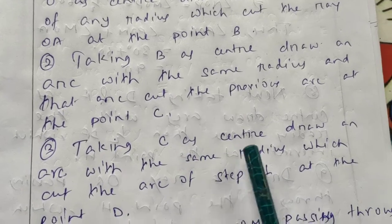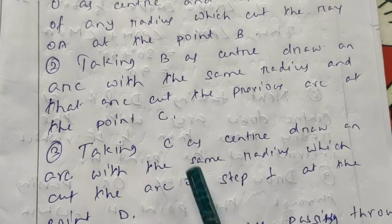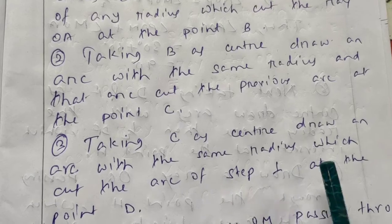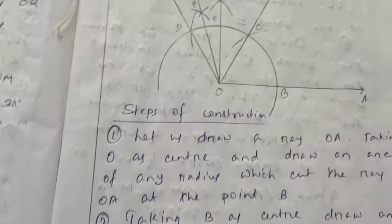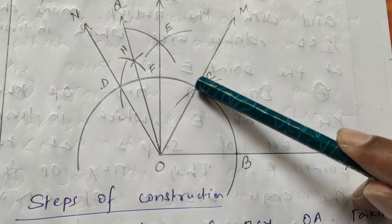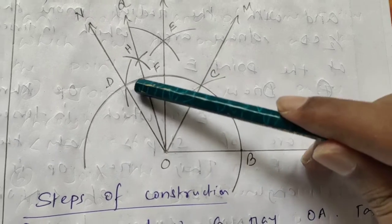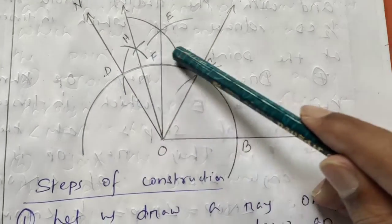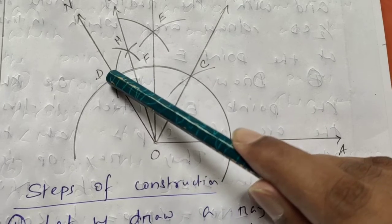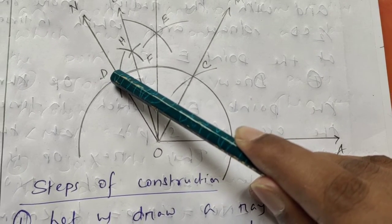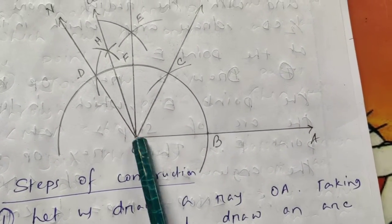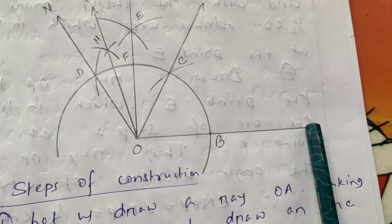Step three: taking C as center, draw an arc with the same radius which cuts the arc of step one at the point D.